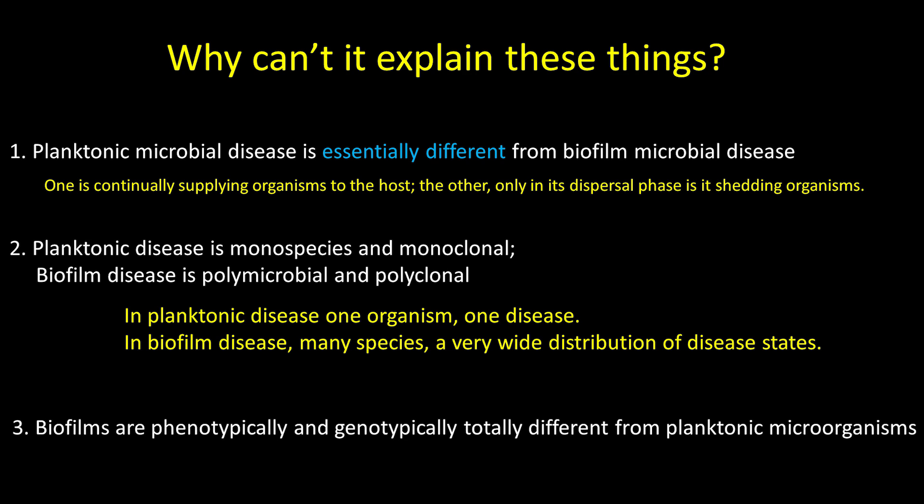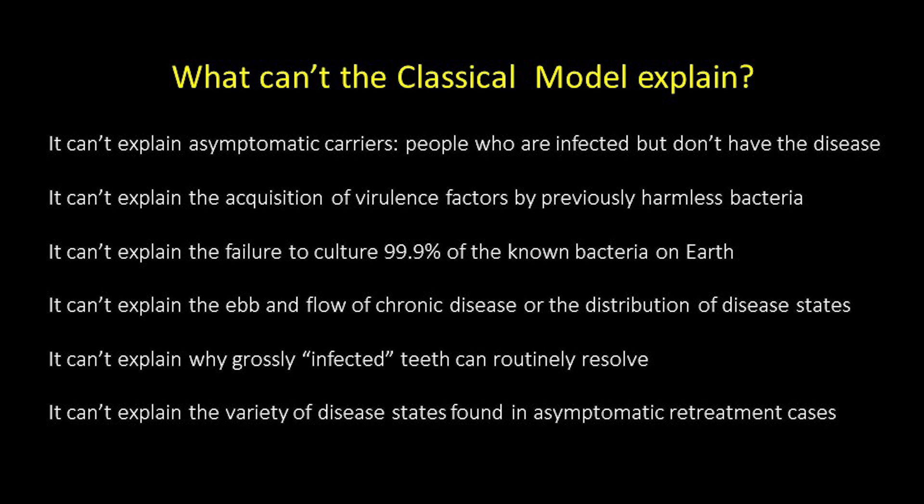The take-home message is this: Koch's postulates really can't be fulfilled because it's impossible to duplicate all the variables that are involved in disease expression. Additionally, Koch's postulates do not allow us to readily address naturally occurring environmental, genetic, and other relevant factors that influence disease causation. And they don't allow us to consider the pathogenic complexities induced by sequential or simultaneous infection with polyclonal and polymicrobial biofilm subtypes that we know characterize such infections.